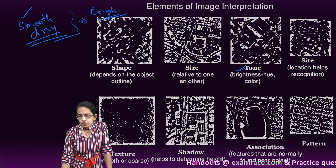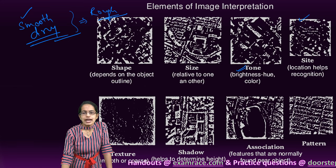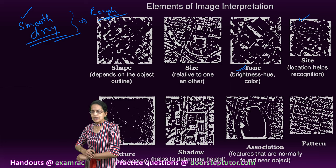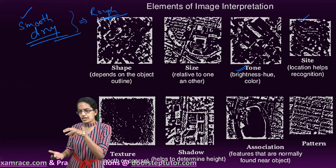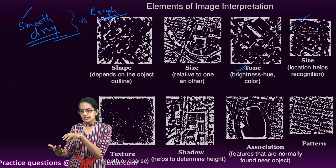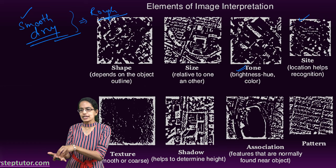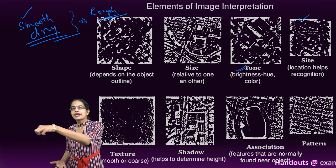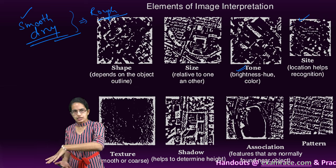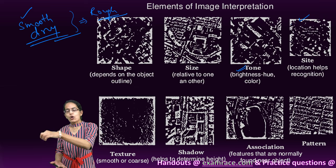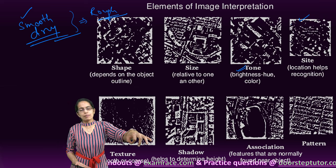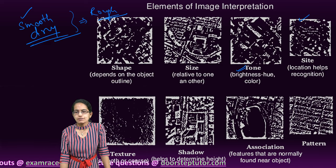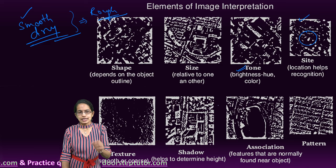The next is the site or the location. Site is the location and it helps us in actually understanding where the pattern is there. When I say the site, it exactly tells me that this is the point where the industry is. The exact site of an industrial location or a mining location could be explained through image interpretation where I can say this is the mining area that is seen.